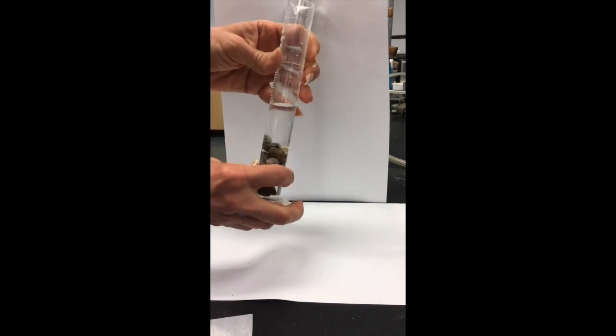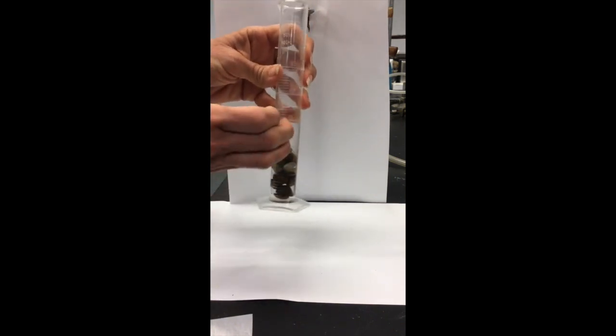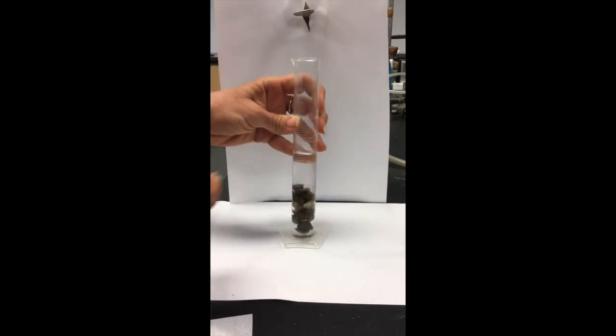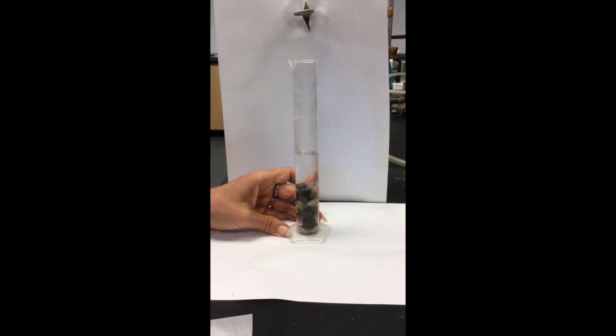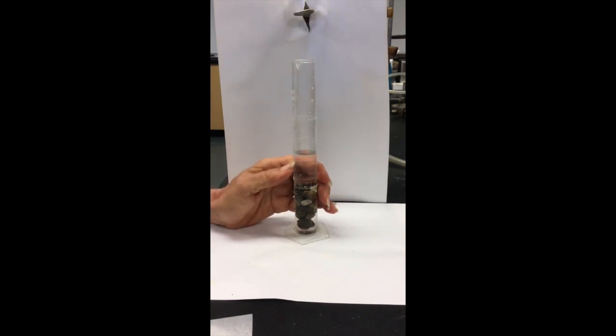You can see our water level has risen, and this is due to the volume of the rocks. This is how we can calculate the volume of the rocks—by what we call water displacement. We want to record the volume of the new water level.